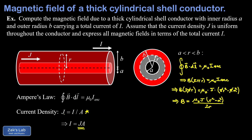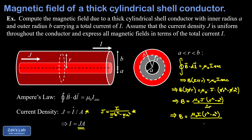To relate j to the total current I, we consider the entire wire. The current density is the total current I divided by the total conducting cross-section, which is an annulus with outer radius b and inner radius a: area = πb² − πa². Substituting this expression for j into our result and factoring π together with the 2r already in the denominator, we get B = μ₀I(r² − a²) / [2πr(b² − a²)].